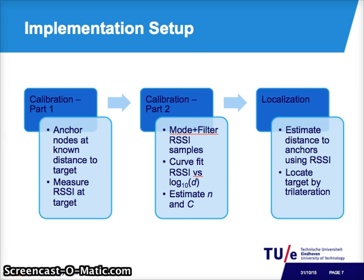This is our implementation setup. Calibration is performed offline in two parts. Part 1 is implemented in Contiki: we measure RSSI at the target from packets sent by anchors positioned at different distances. Part 2 is in MATLAB: we apply the mode-plus-filter technique on the RSSI samples, then curve-fit a straight line through RSSI versus log(d) to estimate n and c. After calibration, we perform localization in Contiki: we measure RSSI at the target, estimate distance to anchors, and perform trilateration to locate the target.